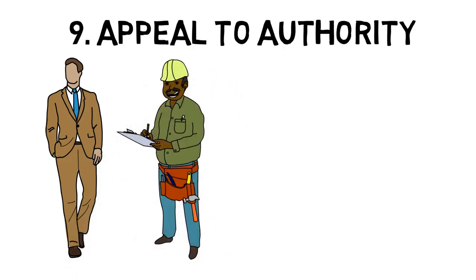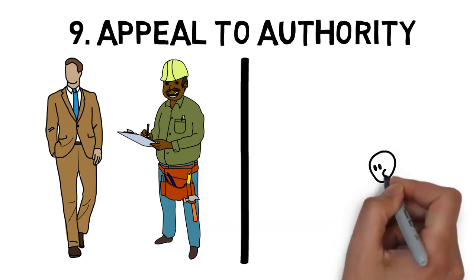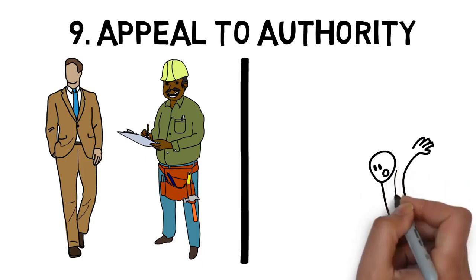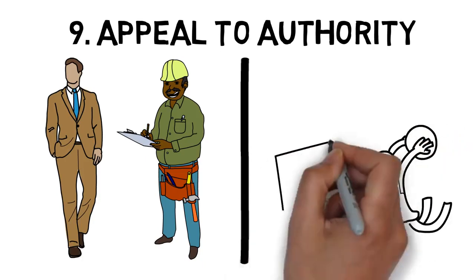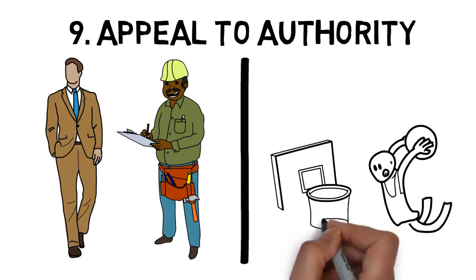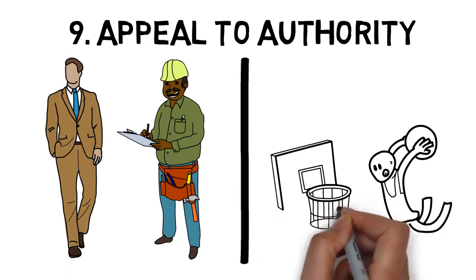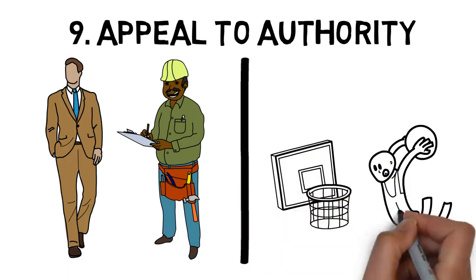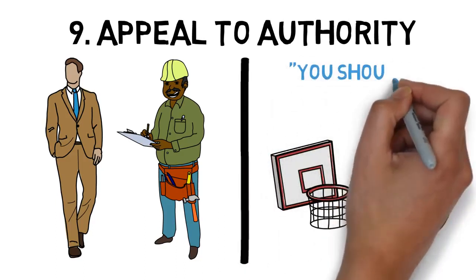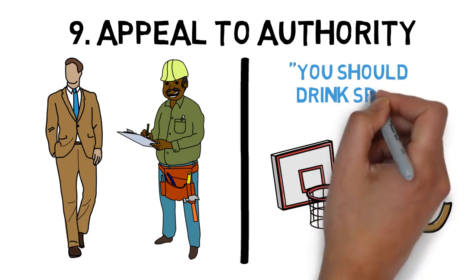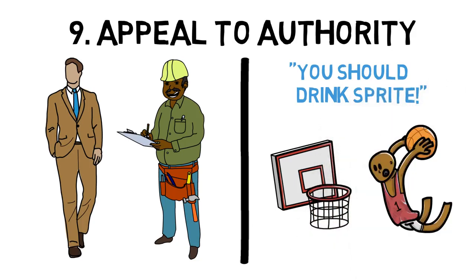For example, companies like Gatorade and Sprite often have notable athletes support their drinks in advertisements. I've seen LeBron James, who happens to be one of my favorite athletes, endorsing Sprite, and I've seen many other people with a similar status in a similar advertisement. Why do companies do this? Because people trust celebrities. They trust authority figures. It's a very persuasive psychology trick, and you can use it too.